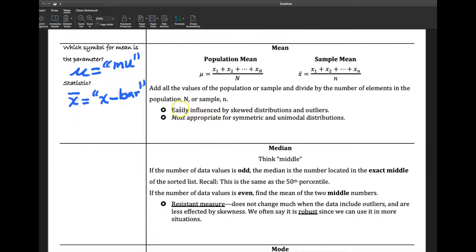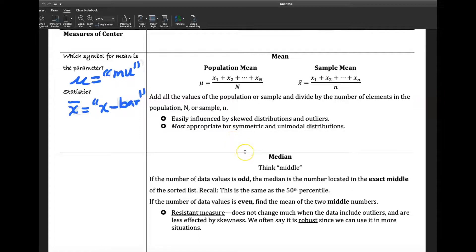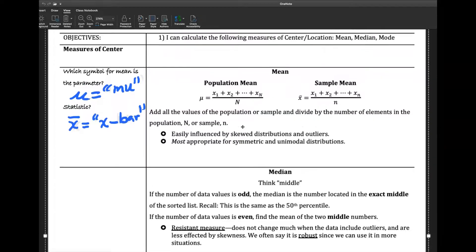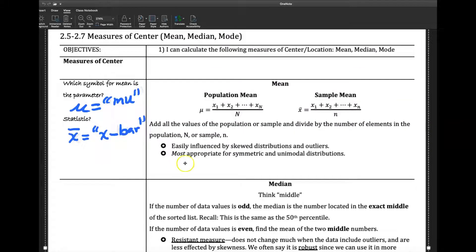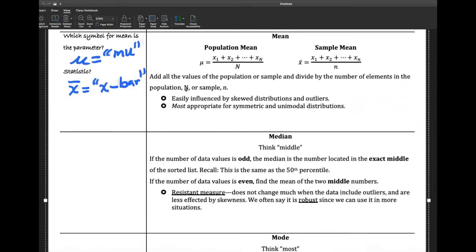We talk about these terms here. Easily influenced by skewed distributions or outliers. We've talked about distributions. The mean, the median, the mode are related, are the centers of these distributions, how the data spread out. We want to make sure you're able to decide to choose which measure of center is appropriate. In this case, we're looking at the most appropriate for symmetric or unimodal distributions. We use the mean.